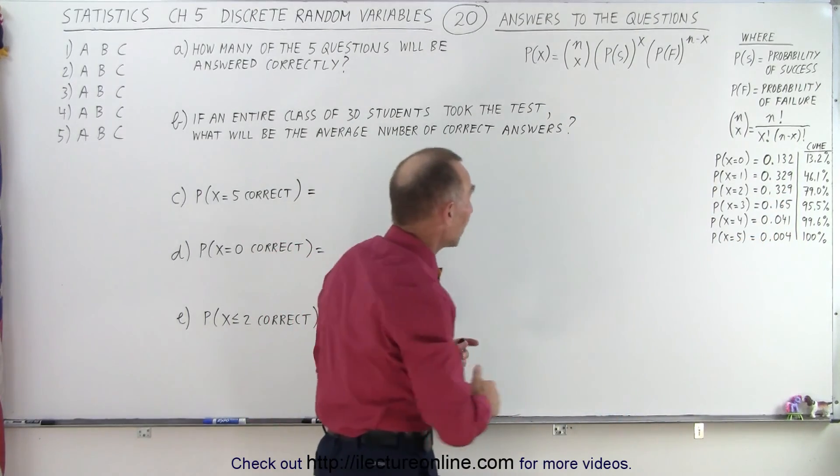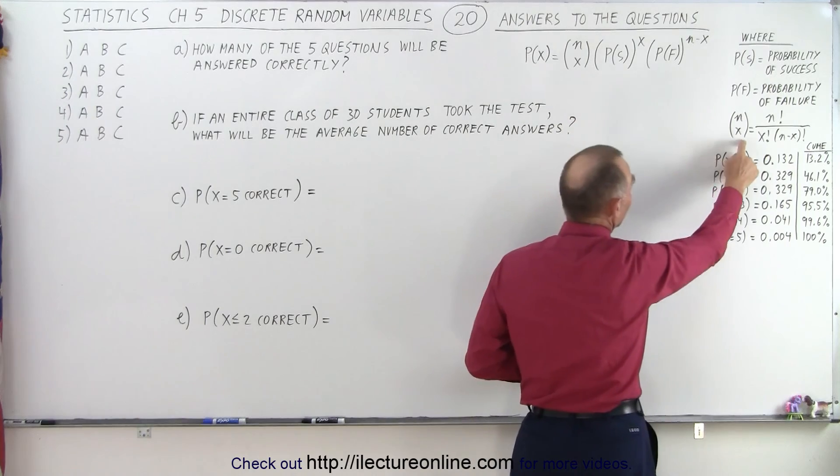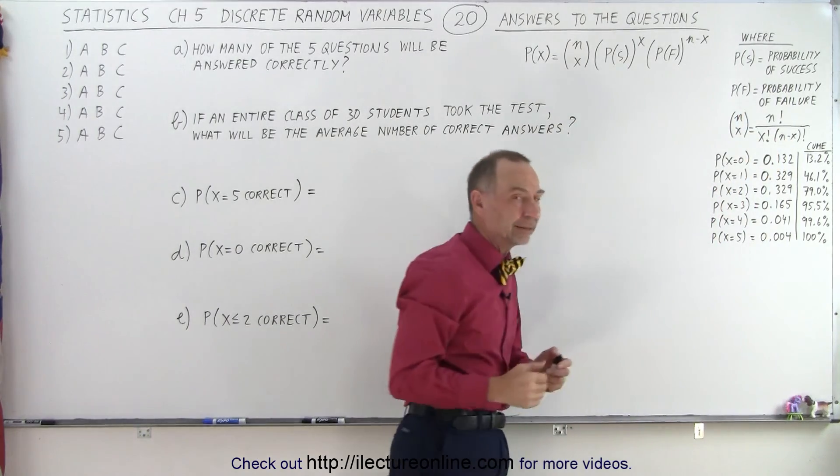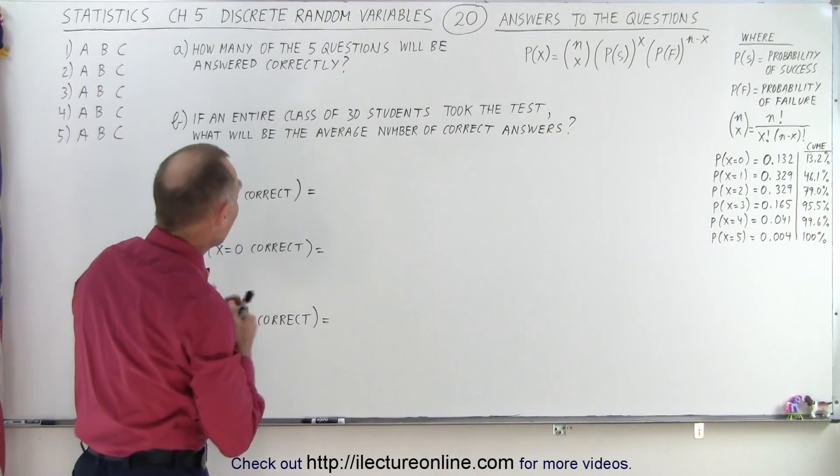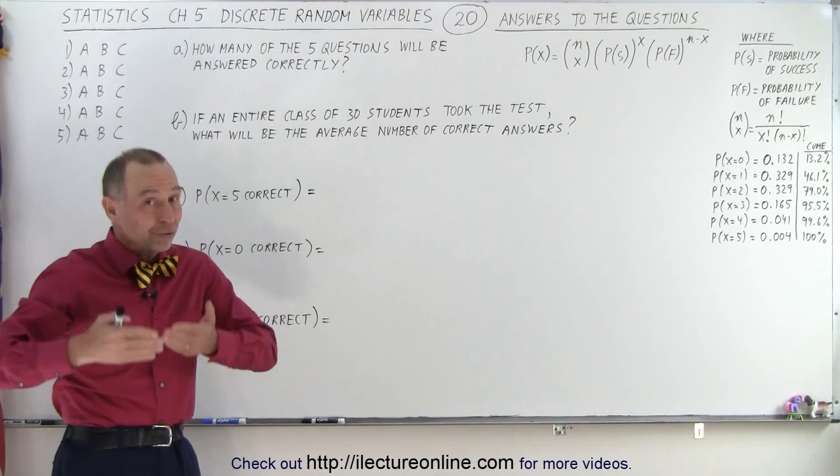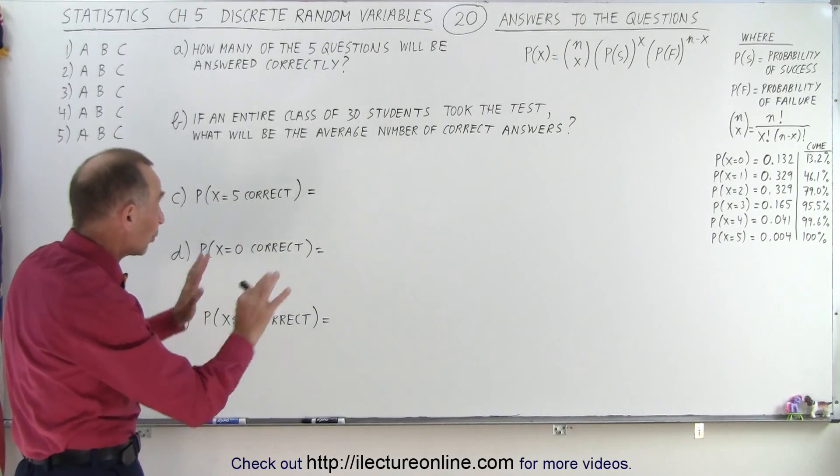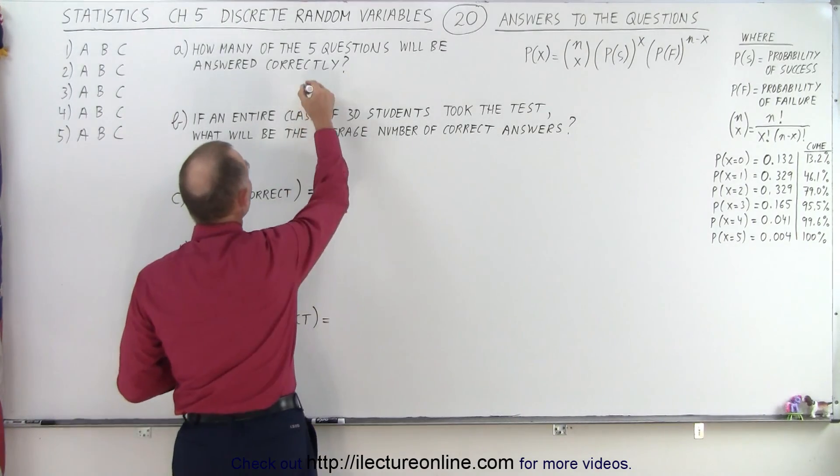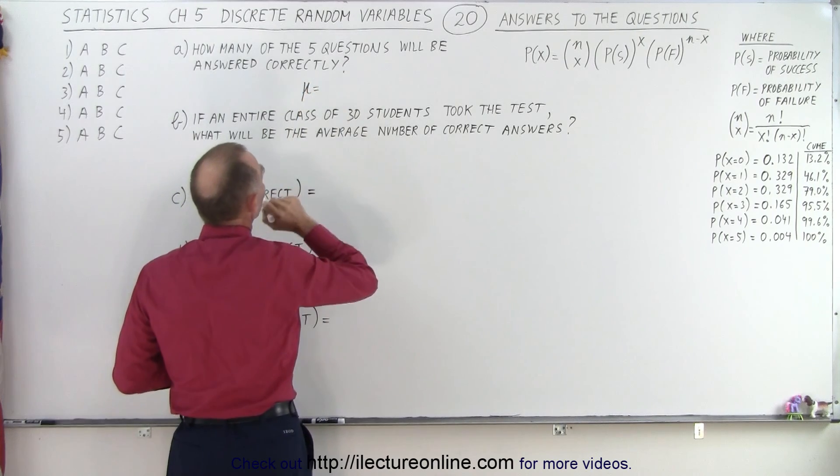And also if we forgot what this means, here we have the definition of N over X like this, what that actually means and how to calculate it. So going back to how many of the five questions will be answered correctly, if you were to take the test and you're purely just guessing, it turns out that is equal to the mean of that binomial distribution.